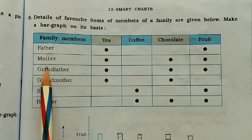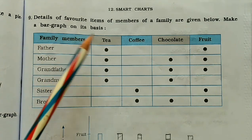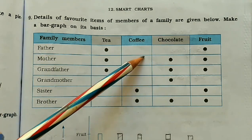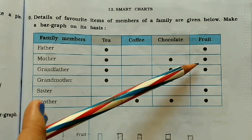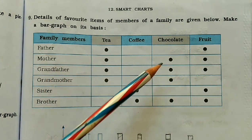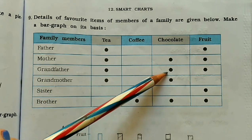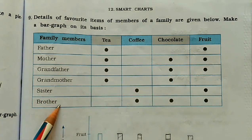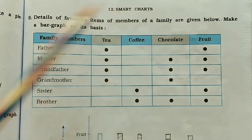Family members: father, mother, grandfather, grandmother, sister, and brother. What do they like? Father likes tea but doesn't like coffee and chocolate because there is no symbol. Father likes fruit. Mother likes tea, chocolate, and fruit. Grandfather likes tea, chocolate, coffee, and fruit. Brother likes coffee, chocolate, and fruit. This is the detail of favorite items of the members of the family.